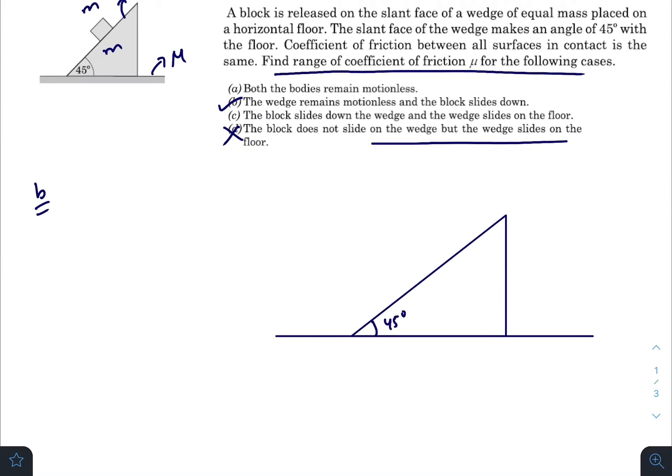This is the inclined plane, this is the horizontal surface. This one is 45 degrees. This is the block. The forces acting on the block are the normal force, mg sin 45, and the friction on the lower surface which is μ times N, that is μ mg cos 45.